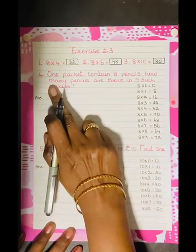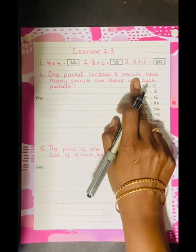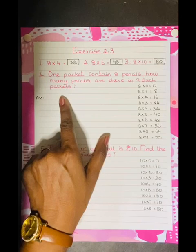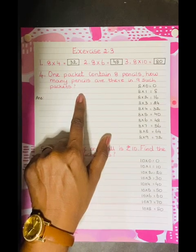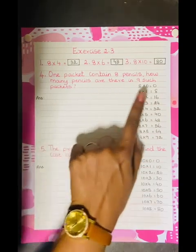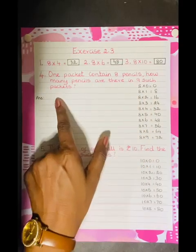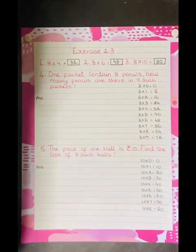Let's see the fourth sum. One packet contains 8 pencils. How many pencils are there in 9 such packets? So, 1 packet contains how many pencils? 8 pencils are there. So, how many pencils are there in 9 such packets? First, as usual, we have to write number of, number of pencils.